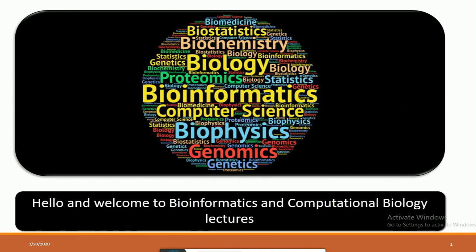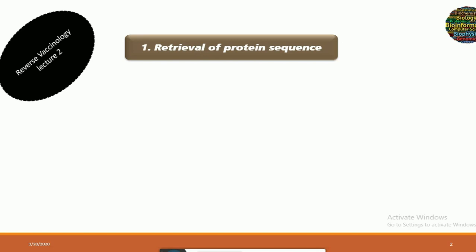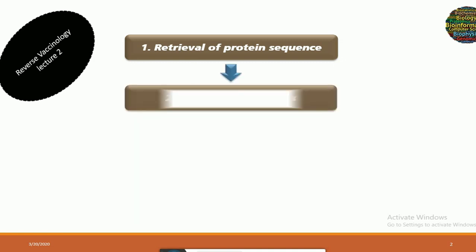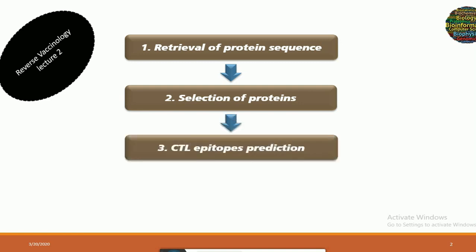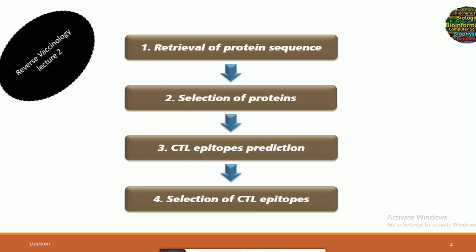Hello and welcome to Bioinformatics and Computational Biology Lectures. This is Lecture 2 in the reverse vaccine allergy series. In this lecture we will talk about retrieval of protein sequences from different databases, then selection of proteins that are best for designing a vaccine, and then the prediction of cytotoxic T-lymphocyte epitopes for those proteins, and then selection of the best CTL epitopes for designing the vaccine.